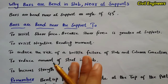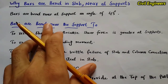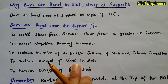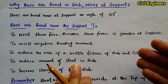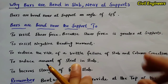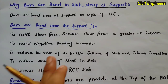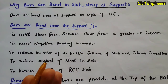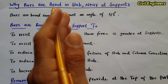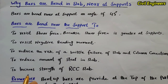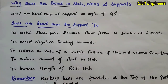Another point is to reduce the amount of steel in the slab. When you provide the bent-up bar in the slab, it reduces the amount of steel because it can increase the strength of the slab. So bent-up bars can reduce the amount of steel in the slab because bent-up bars can increase the strength of the slab and also to increase the strength of the RCC slab.